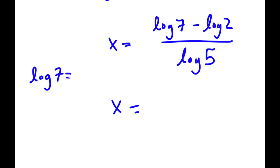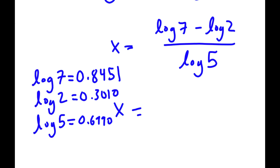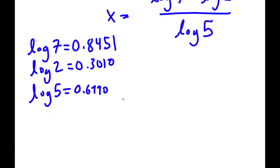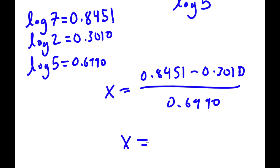So log 7 equals 0.8451, log 2 equals 0.3010, and log 5 equals 0.6990. So x equals (0.8451 minus 0.3010) over 0.6990, meaning x equals 0.5441.